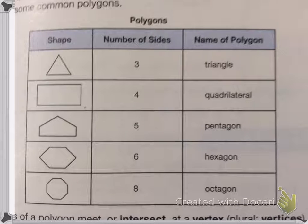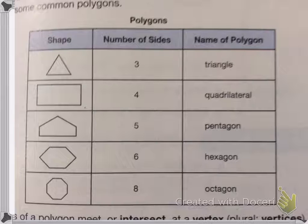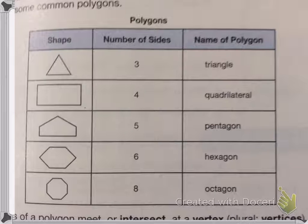Here are some common polygons. We have the triangle which has three sides, four sides is a quadrilateral, five sides is a pentagon, six sides is a hexagon, and eight sides is an octagon.